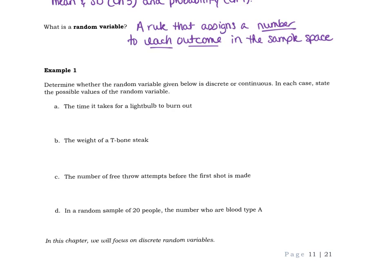Our variable is the time it takes for a light bulb to burn out. So is time discrete or continuous? We should know that time is continuous. We can break it down to minutes, seconds, fractions of a second, et cetera. And then what are the possible times it could take?